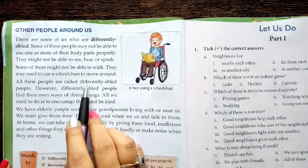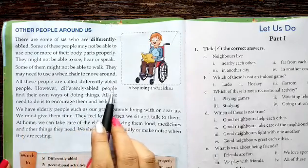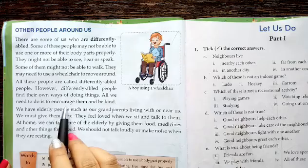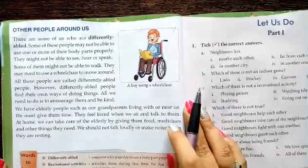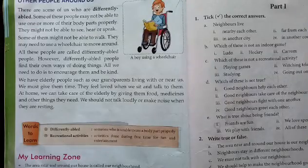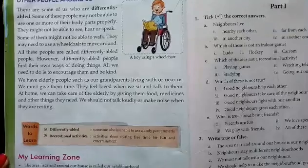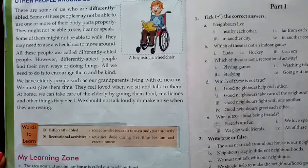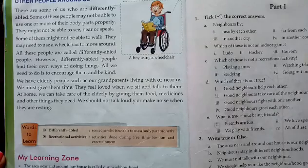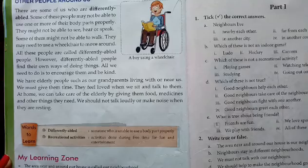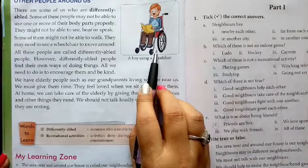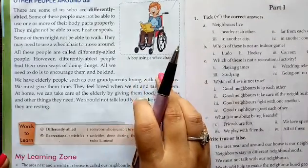All these people are called differently abled people. However, differently abled people find their own ways of doing things. All we need to do is to encourage them and be kind. People who cannot walk may need to use a wheelchair to move around.